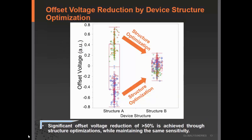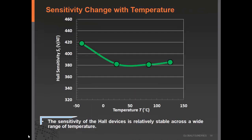Besides sensitivity, another key factor for designers is offset voltage, which determines device performance. We have done significant work optimizing the offset voltage from a structural perspective. From structure A to structure B, there is quite significant reduction in offset voltage achieved through structural optimization. We also tested the device under different operating temperatures from minus 40 degrees C up to 125 degrees C. It shows quite stable performance with no sensitivity degradation, so by proper temperature calibration, the designer can use it across a wide temperature range.